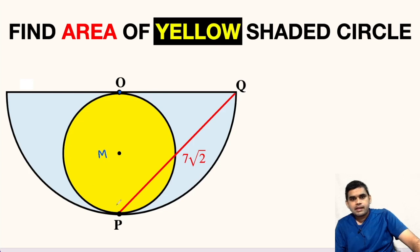O and P are the points of contact between the semicircle and yellow circle. This line segment PQ measures 7 root 2 units and we are asked to find the area of this yellow shaded circle.